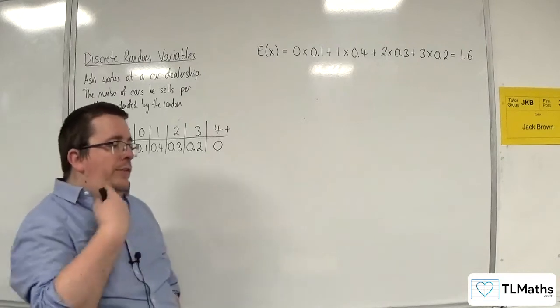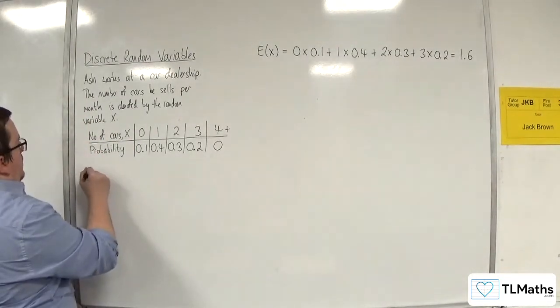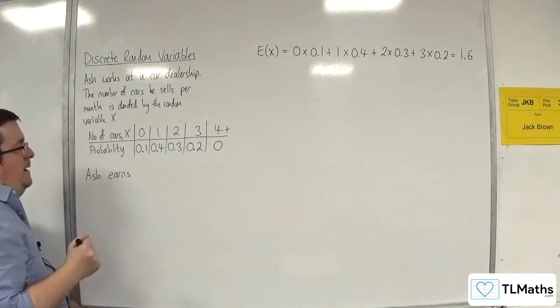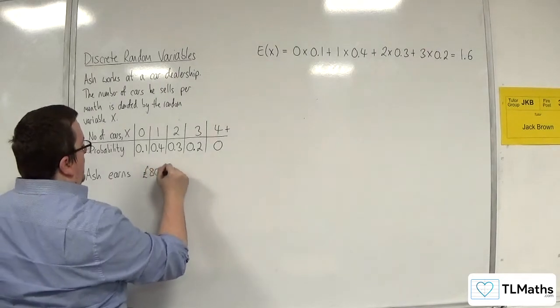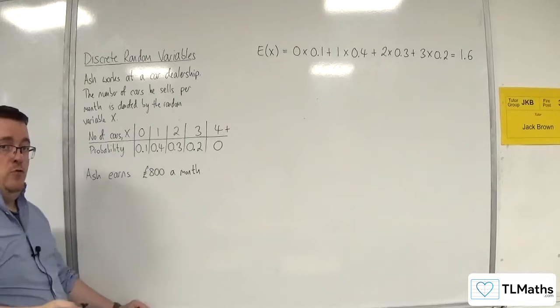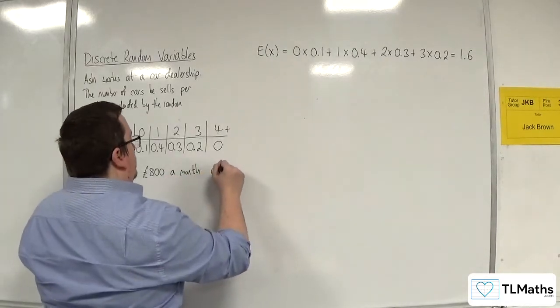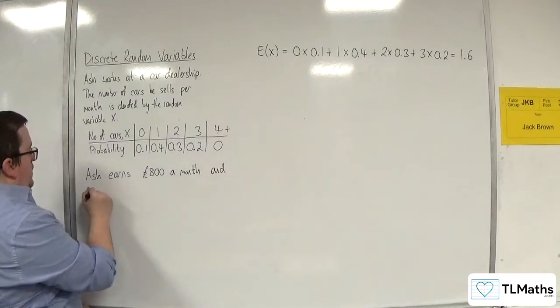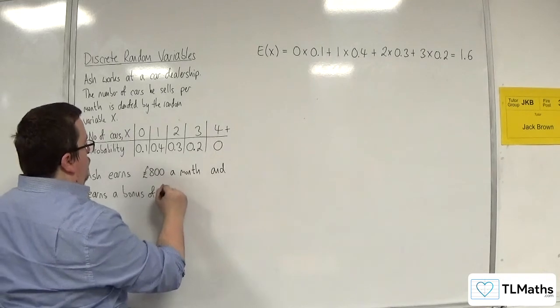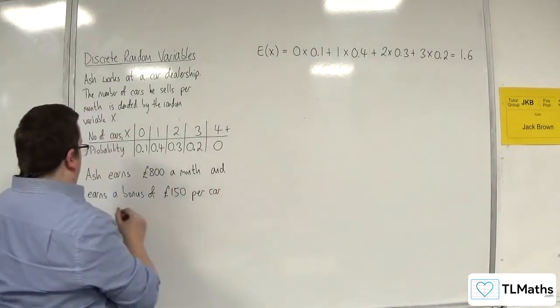Right. Let's then say that Ash earns, let's say, £800 a month. So, that's his salary and earns a bonus of £150 per car that he sells.